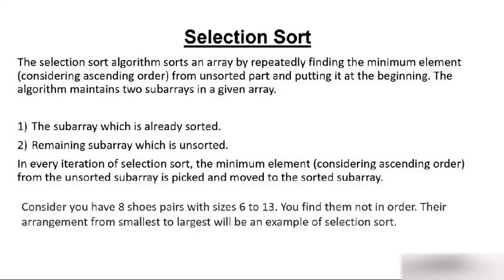Consider you have eight pairs of shoes, sizes six to thirteen, all messed up around the room. To arrange them from smallest to largest is an example of selection sort. You find the sixth pair first because six is the smallest, put it at the beginning, then find the next smallest — seven — put it in the second position, and so on. This is like how shoe stores always display sizes in order: size six, seven, eight, nine, ten.